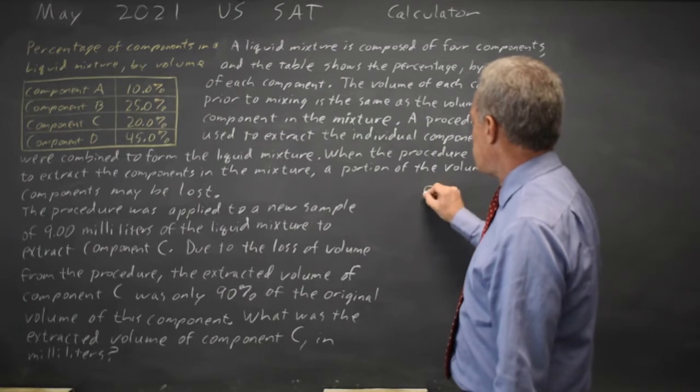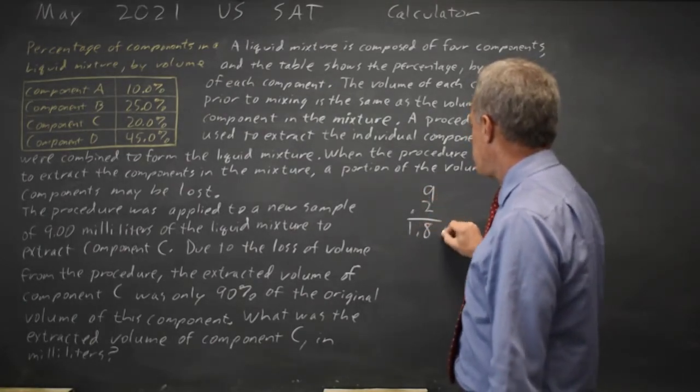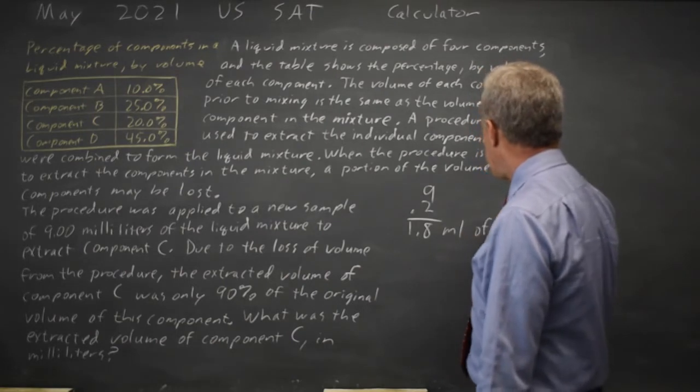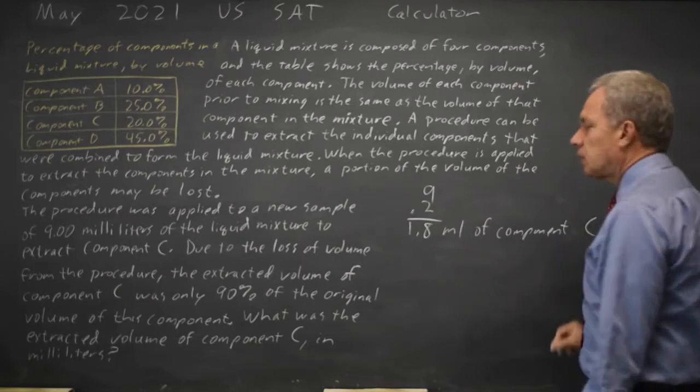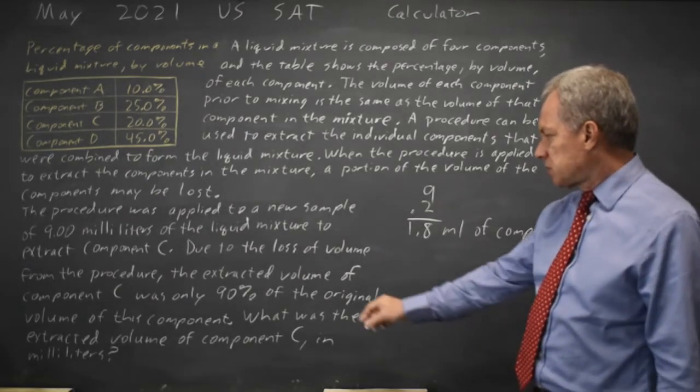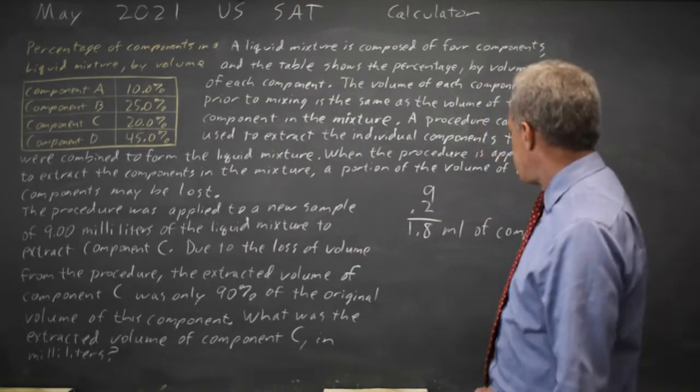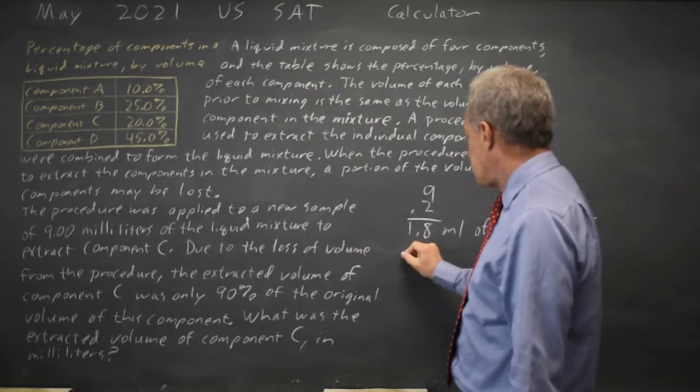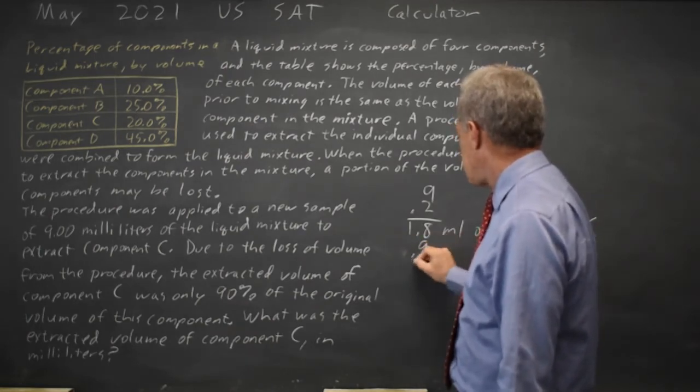So 20% of 9 milliliters is 9 times 0.2 is 1.8 milliliters of component C, but this procedure only extracts 90% of that amount. So 90% of 1.8 is 0.9 times 1.8.